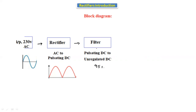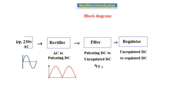After the filters, we give the filter output to the regulator. The regulator converts unregulated DC to regulated DC. If we use the regulator, we get 100 percent DC — that is pure DC. This pure DC is the final output after all stages, compared to the pulsating DC we started with.